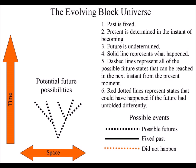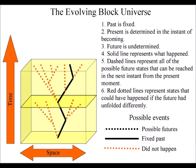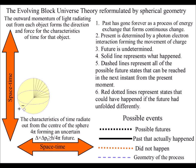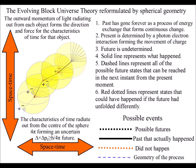In this theory, each slice of the evolving block universe is formed by spherical geometry. Instead of having blocks, we have spherical geometry, with the surface forming the evolving slice that is always at right angles to each object.